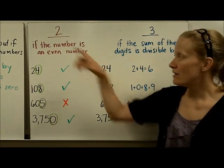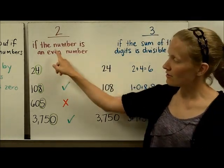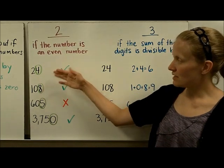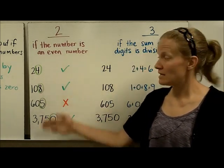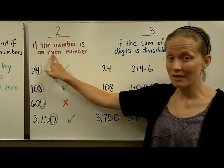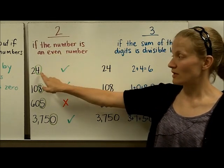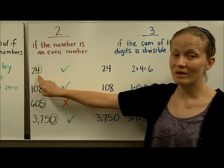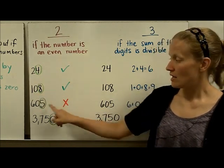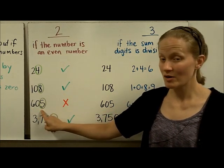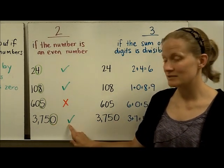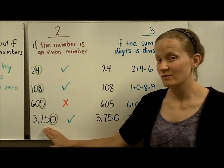Let's start with an easy one. You can find out if a number is divisible by 2 by figuring out if the number is even. If it's an even number, then it's divisible by 2. For each divisibility rule, I'll use the same four numbers. To tell if it's even, just look at the last digit in the ones place. 24 is divisible by 2 because of the 4. Similarly, the next even number is divisible by 2. 605 is odd, so it is not divisible by 2. And 3,750 is even, so it is divisible by 2.